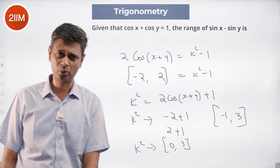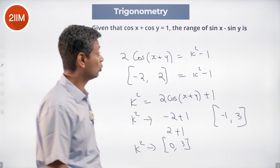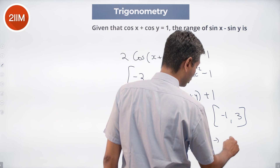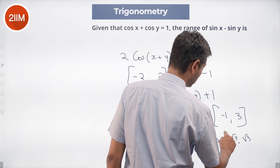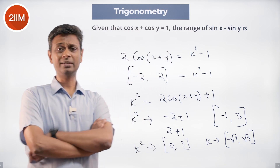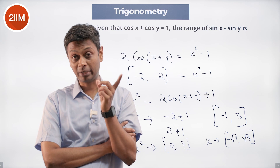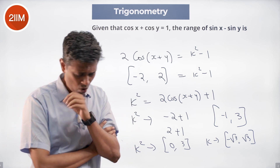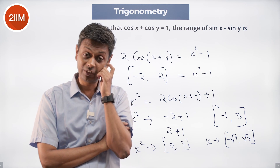k² cannot go from -1 to 0, so k² ranges from 0 to 3. That means k² ≤ 3, so k must lie between -√3 and +√3. Beautiful question!